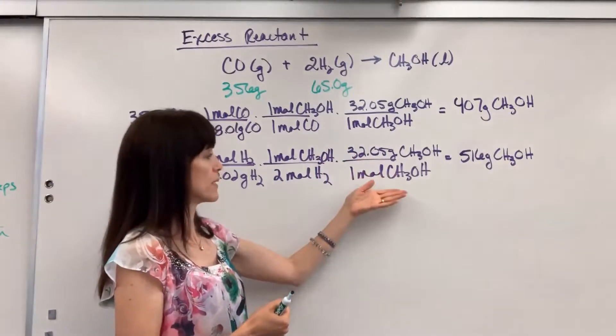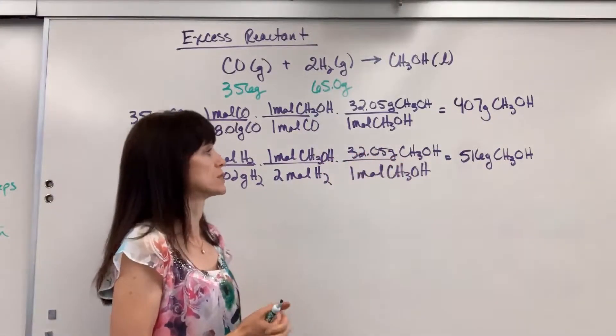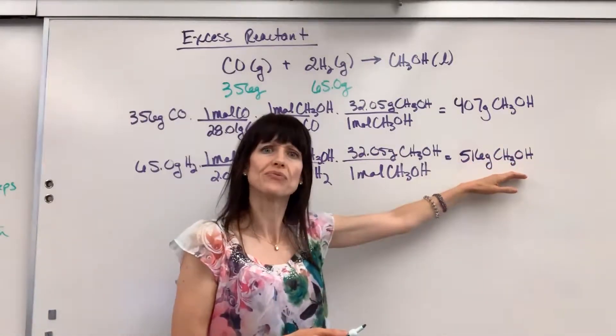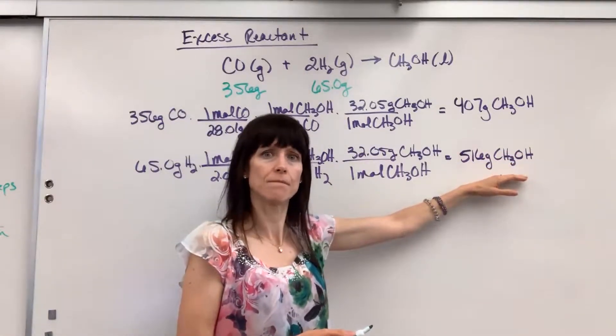And then I want to know that in grams. So use molar mass of methanol, one mole of methanol is 32.05 grams. That will produce 516 grams of methanol.